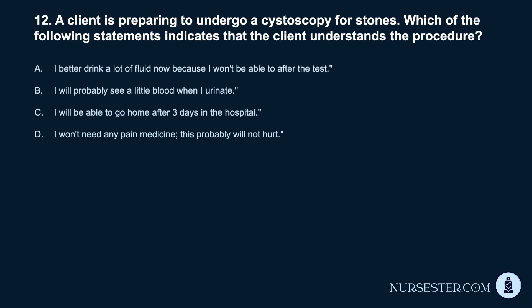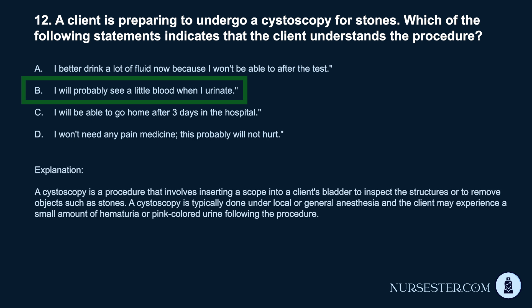Question 12. A client is preparing to undergo a cystoscopy for stones. Which of the following statements indicates that the client understands the procedure? Correct answer: B. I will probably see a little blood when I urinate. A cystoscopy is a procedure that involves inserting a scope into a client's bladder to inspect the structures or to remove objects such as stones. It is typically done under local or general anesthesia, and the client may experience a small amount of hematuria or pink-colored urine following the procedure.